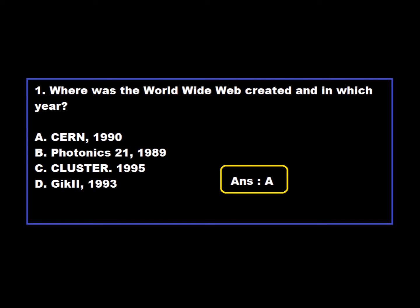Question 1: Where was the World Wide Web created and in which year? Option A: CERN 1990. Option B: Photonics. Option C: Cluster. Option D: GIK, 2nd 1993. Option A is correct — the World Wide Web was created at CERN in 1990.